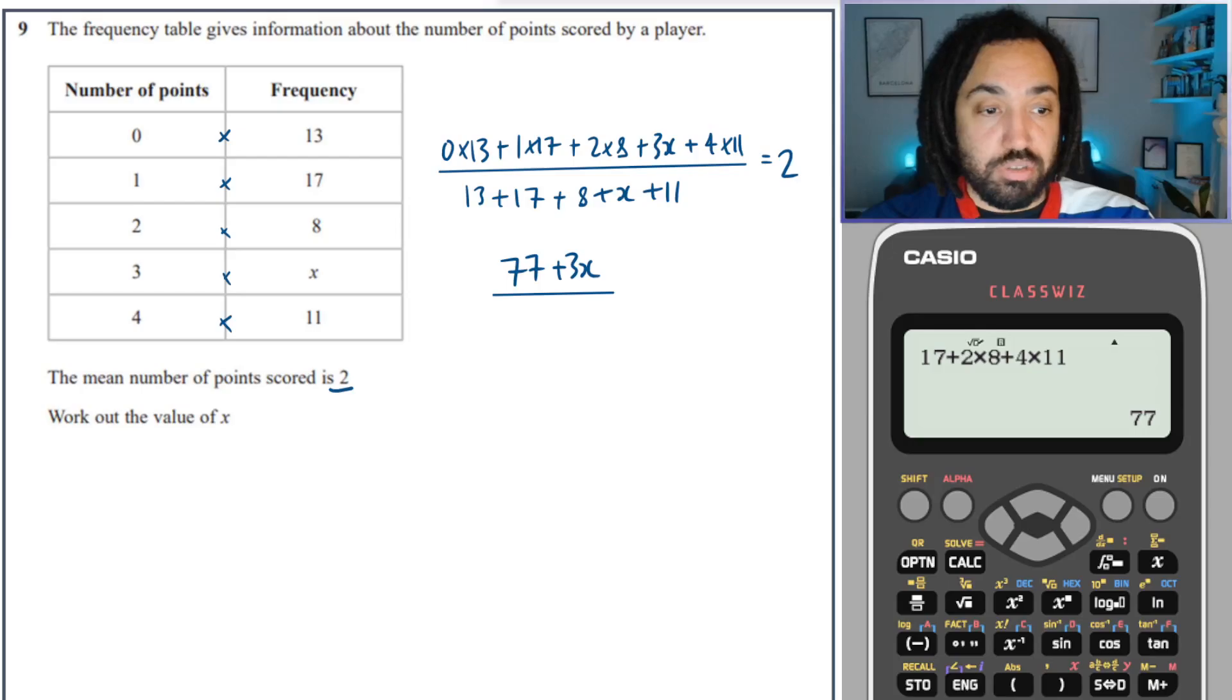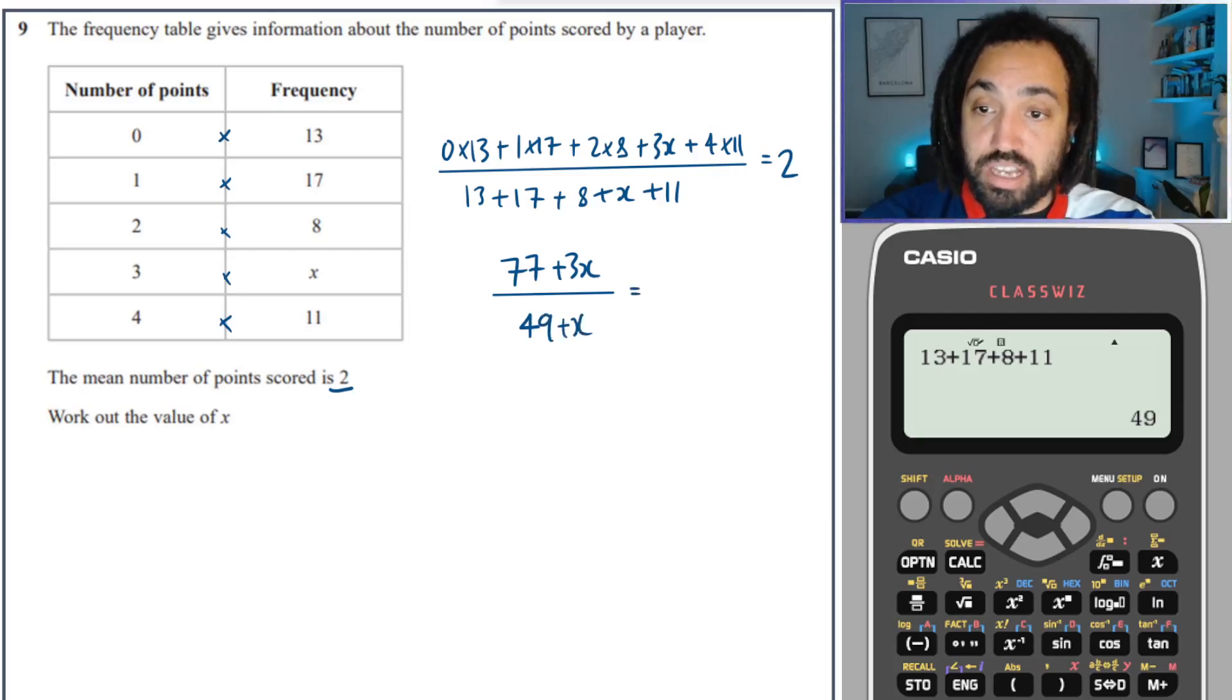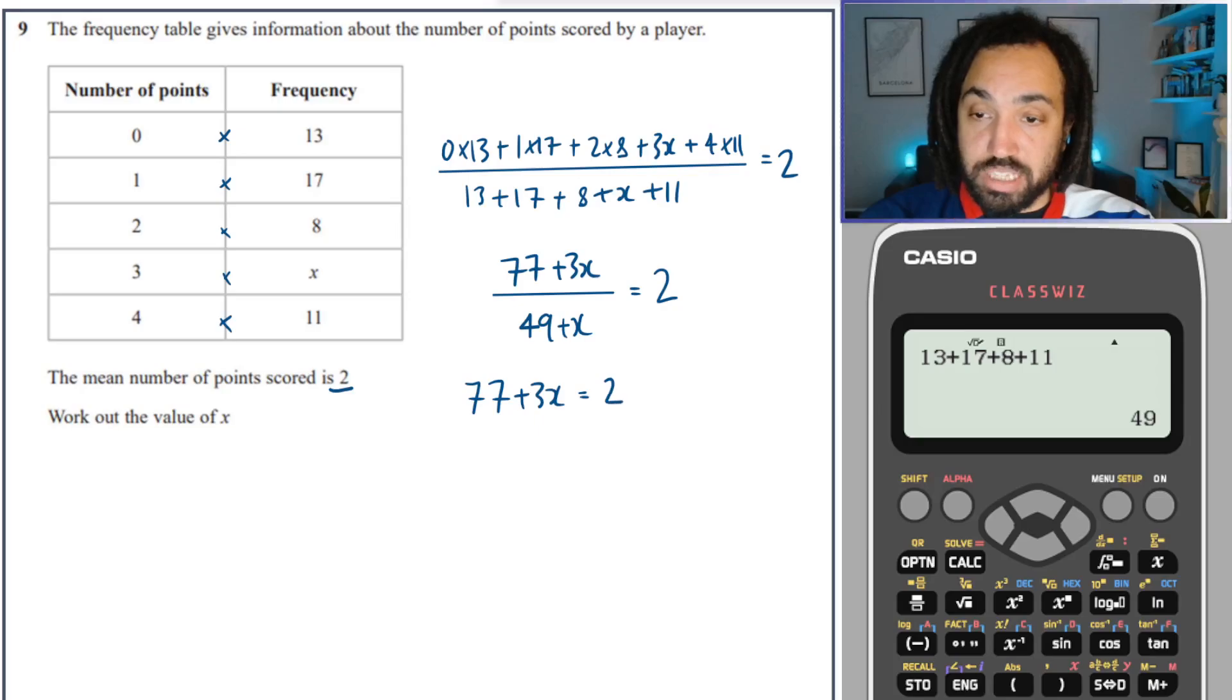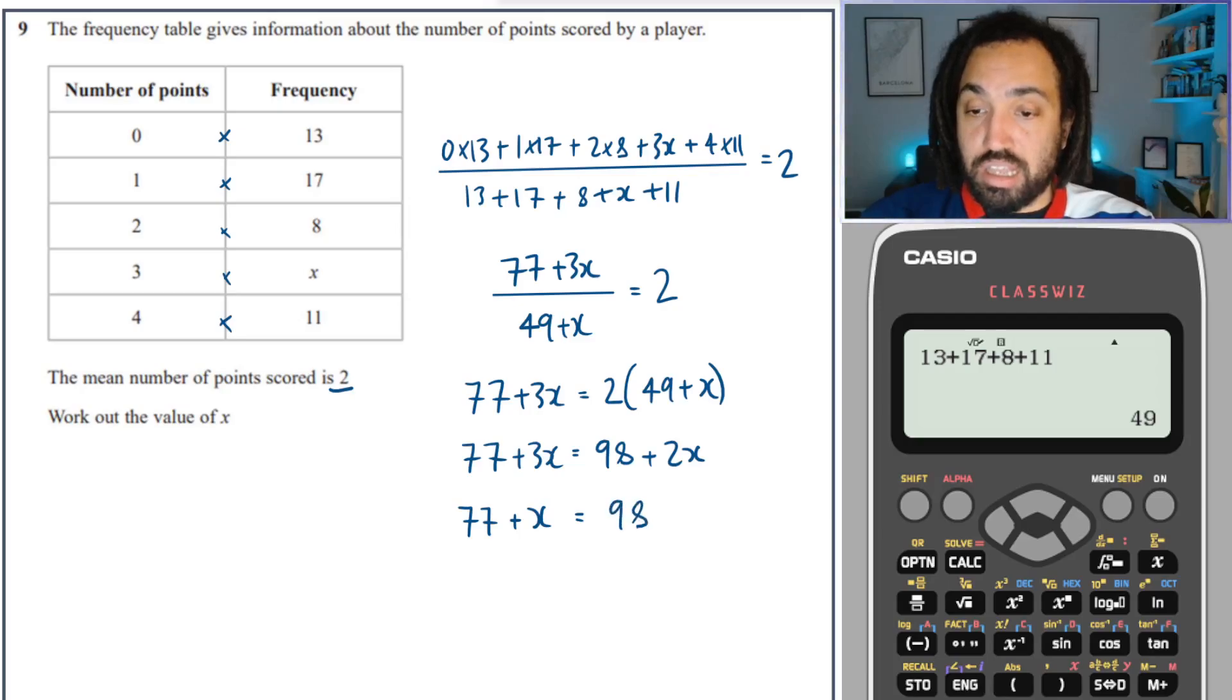On the denominator we've got 13 plus 17 plus 8 plus 11, which is 49, and plus that x down there as well. All of that equals 2. Multiply across, so I'm going to times both sides by 49 plus x, which is going to clear that denominator. Then I'm going to expand the brackets. So that's going to give me 2 times 49 is 98 plus 2x. Let's subtract 2x from both sides. So that becomes 1x, because 3 minus 2 is 1. Then let's subtract 77 from both sides, and that gives me 21. So x equals 21.